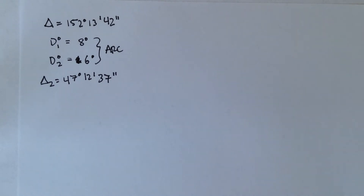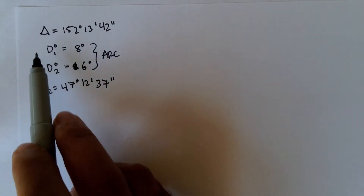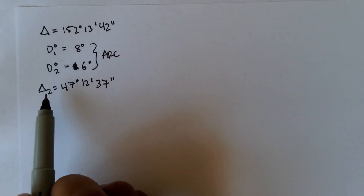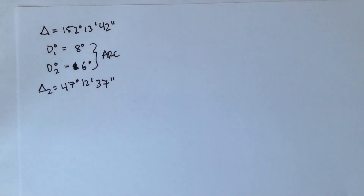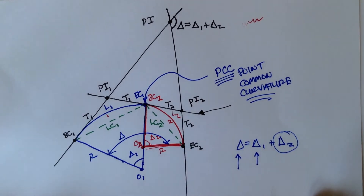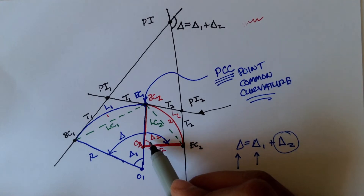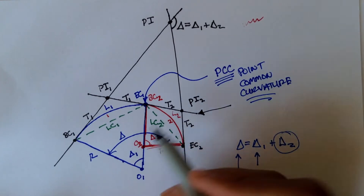The problem wants us to figure out the length of each curve, the long chord of each curve, and the tangent of each curve. Before we begin, we're given the total interior angle for both curves, and the interior angle for curve 2, so we can figure out the interior angle for curve 1. Here's the diagram from the last video — we're given the total angle and delta 2, so we need to figure out what delta 1 is.